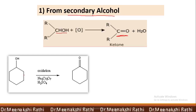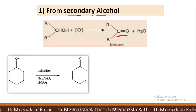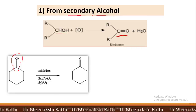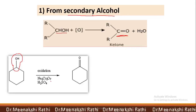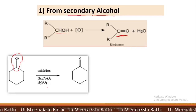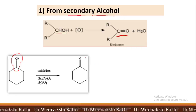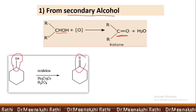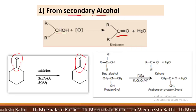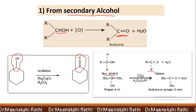Cyclohexanol is a secondary alcohol — you can see the CHOH group is present. On oxidation in the presence of Na₂Cr₂O₇ and H₂SO₄, the secondary alcoholic group gets converted into a ketonic group and we get cyclohexanone. So, secondary alcohol on oxidation gives ketone.